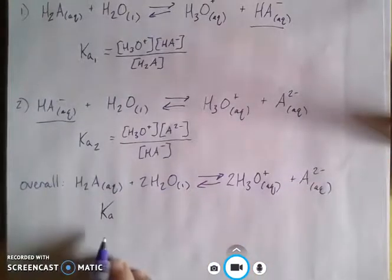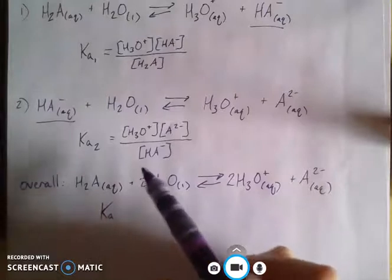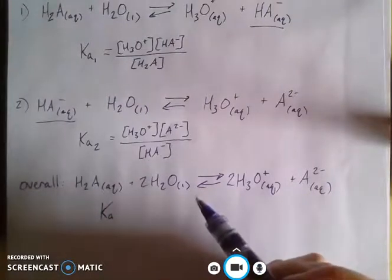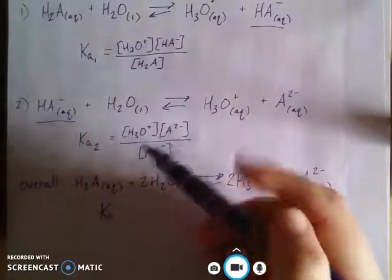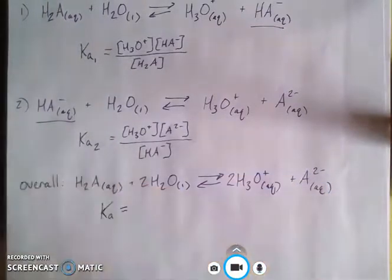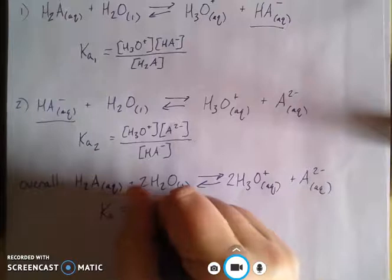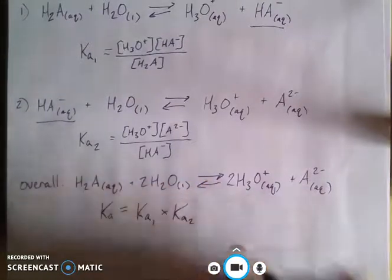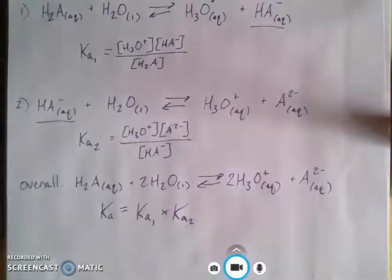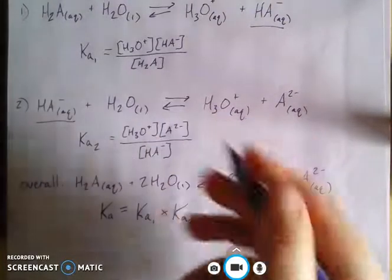The Ka value is a function of the Ka values that have happened for every step along the way, and we said for addition of reactions, then the overall equilibrium constant is equal to the product of the equilibrium constants along the way.